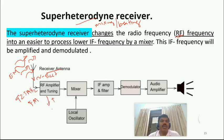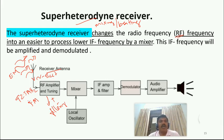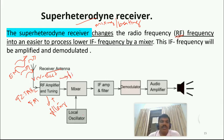In addition to frequency selection, the RF amplifier stage also performs filtering. Filtering removes unwanted signals — we need only that particular frequency, for example 92.5 MHz. So tuning and filtering both happen in the RF amplifier stage, and then the signal proceeds to the next stage.